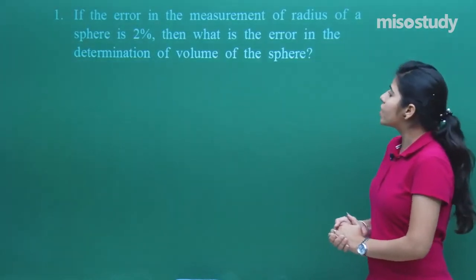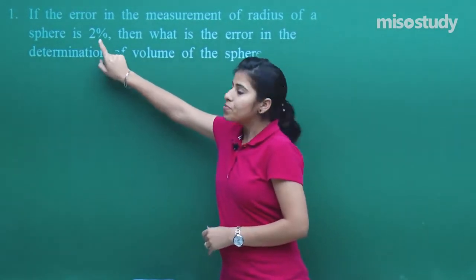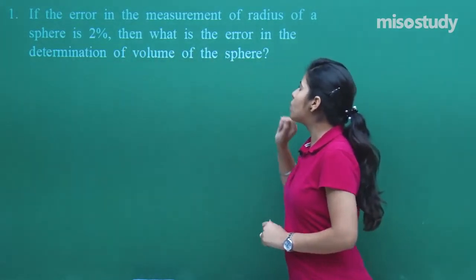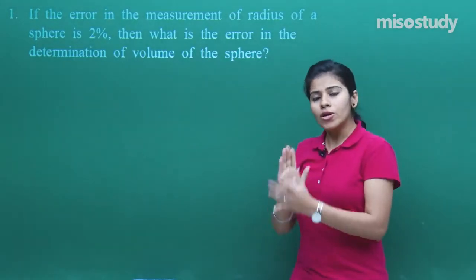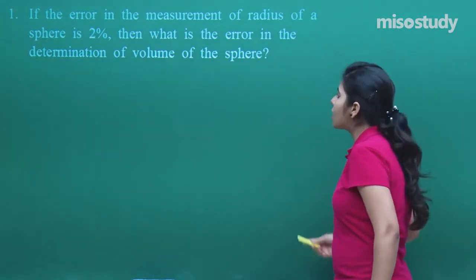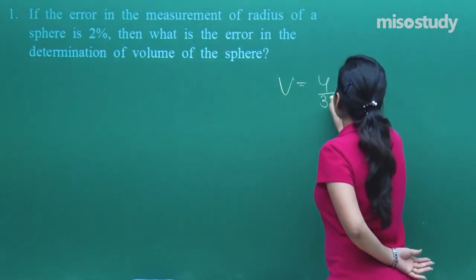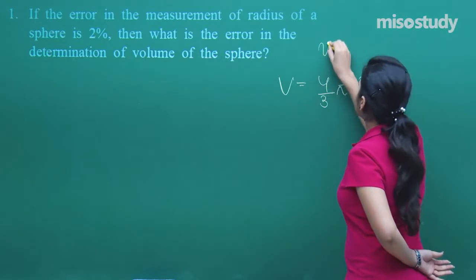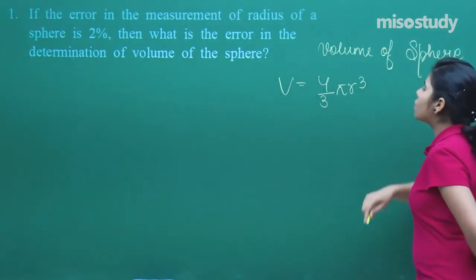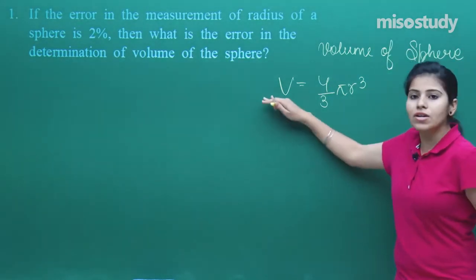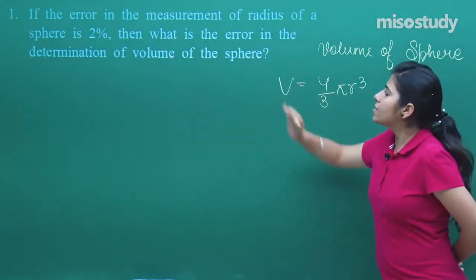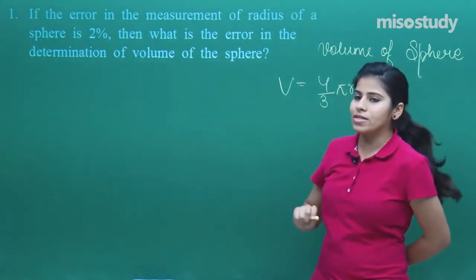In the first question, the error in the measurement of the radius of a sphere is given as 2%. We have to find the error in the determination of the volume of the sphere. The volume formula is V = (4/3)πr³, which gives the relation between volume and radius. The error in the radius is given as 2%.